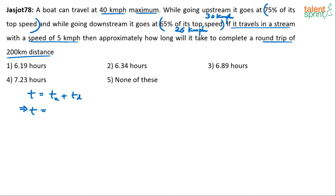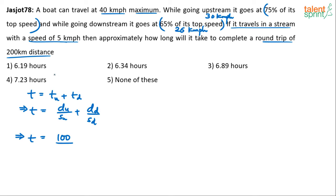Time is distance by speed. So it's distance upstream divided by speed upstream, plus distance downstream divided by speed downstream. The round trip is 200 km, so that means 100 km upstream and 100 km downstream — it has to go 100 km upstream and then come back 100 km downstream.